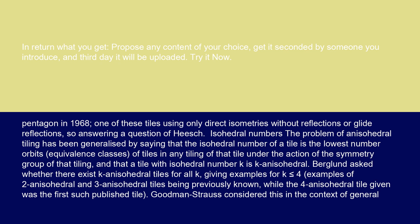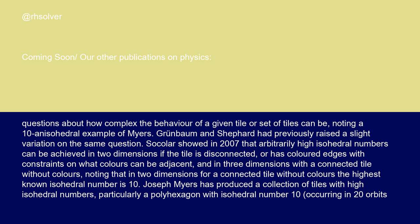Goodman-Strauss considered this in the context of general questions about how complex the behavior of a given tile or set of tiles can be, noting a 10-anisohedral example of Myers. Grunbaum and Shepard had previously raised a slight variation on the same question. Sokler showed in 2007 that arbitrarily high isohedral numbers can be achieved in two dimensions if the tile is disconnected or has colored edges with constraints on what colors can be adjacent, and in three dimensions with a connected tile without colors, noting that in two dimensions for a connected tile without colors the highest known isohedral number is 10.